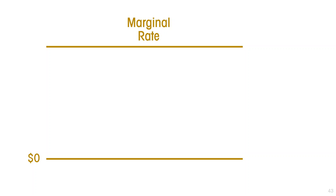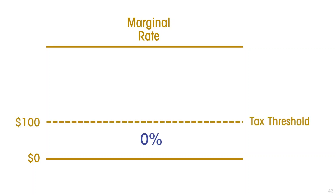Most countries have an income tax threshold, which is a level of income below which the tax rate is zero. You don't pay any income tax on your income up to the tax threshold. For our example here, let us say that that tax threshold is $100 a year, and any income above $100 a year is taxed at a marginal rate of 40%.